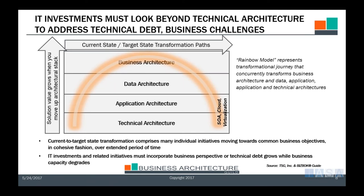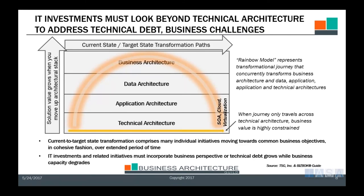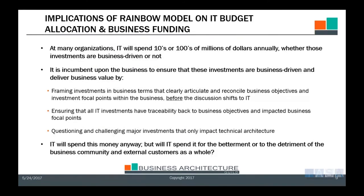As you move up the rainbow and through the perspective of the business architecture and back down, the value you deliver on a business perspective side is going to be significantly greater than if you just go straight across the bottom. Unfortunately, many organizations do that. The transformation journey should concurrently transform business, data, application, and technical architectures in sync — so everybody's aligned. But what we see is that many organizations make investments in IT architectures solely based on improving the technical architecture, either ignoring or not understanding the business architecture, and essentially just cobbling workarounds to the data and application architecture.